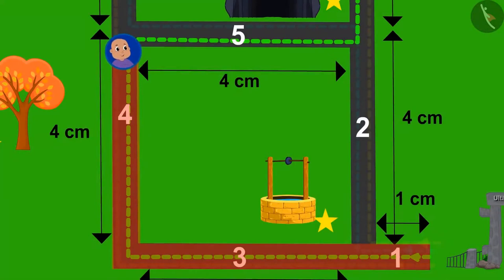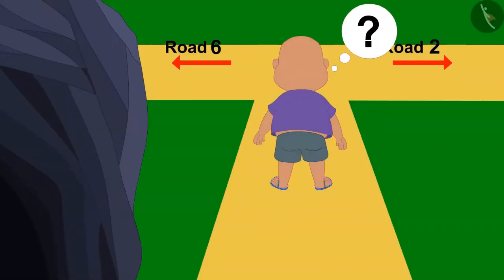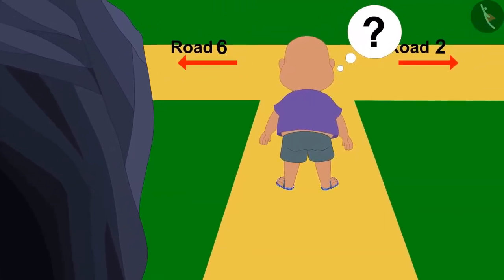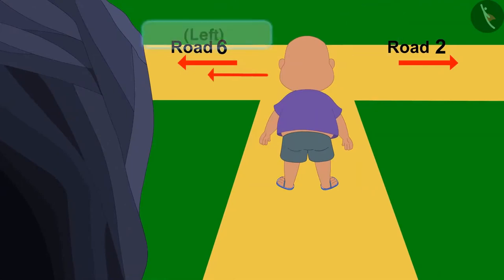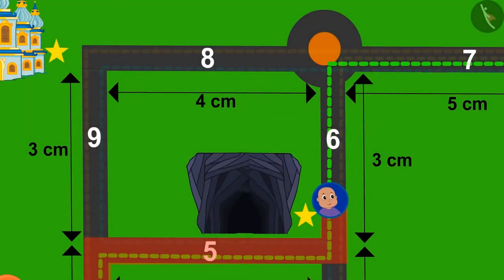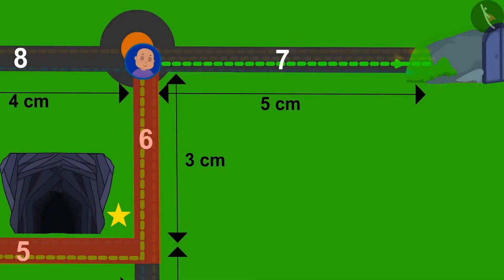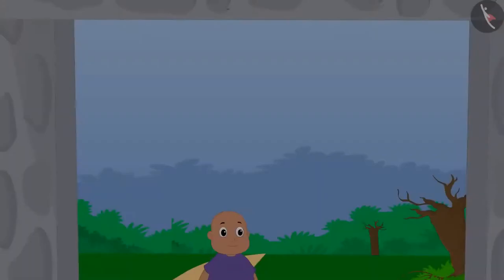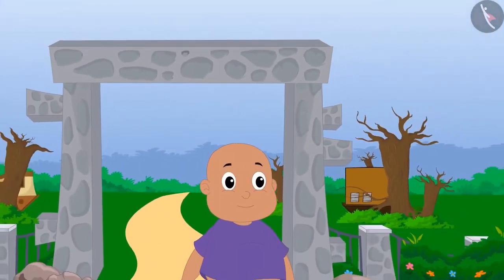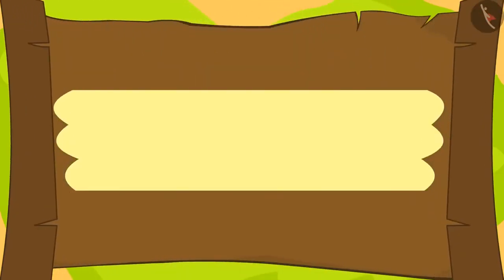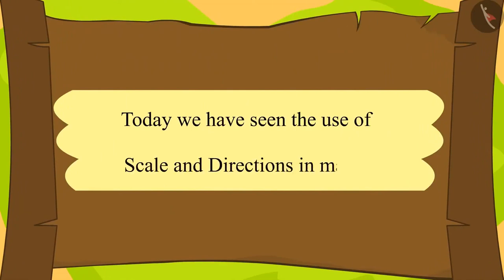Bablu crossed road number 4 in fear, then walked on road number 5 and reached its end. Now Bablu is thinking which way to turn. Can you tell which direction Bablu has to turn from the unique cave to road number 6? Absolutely right — towards the left. Bablu ran fast and crossed road number 6. Now which road will he take after turning right? Road number 7. Bablu crossed road number 7 and reached the exit gate, and came out regaining his strength. Kids, Bablu is thanking you for helping him. Children, in this lesson we have seen the use of scales and directions in maps.